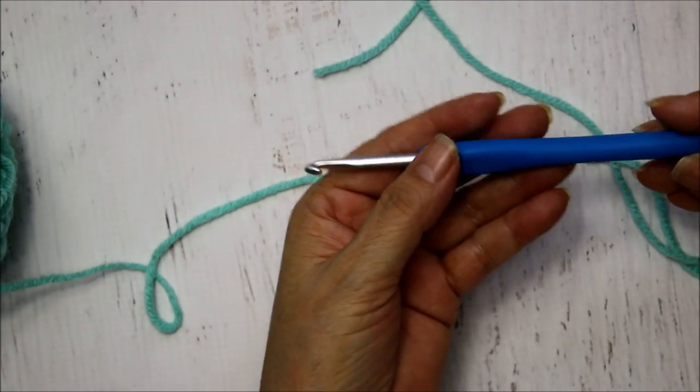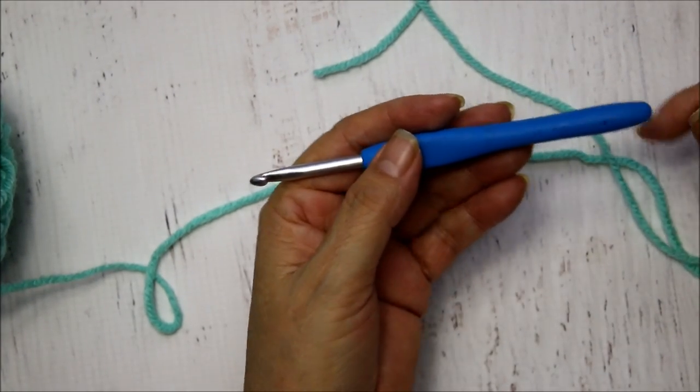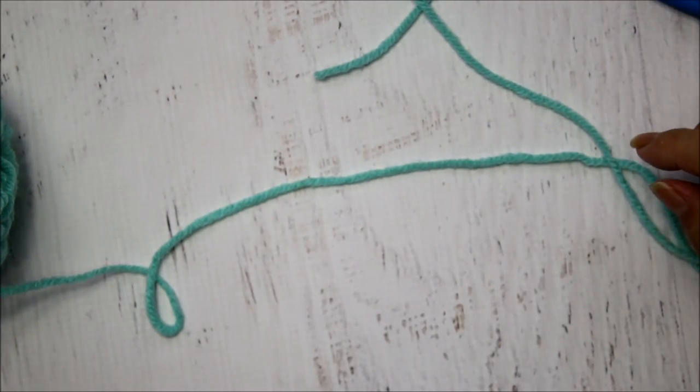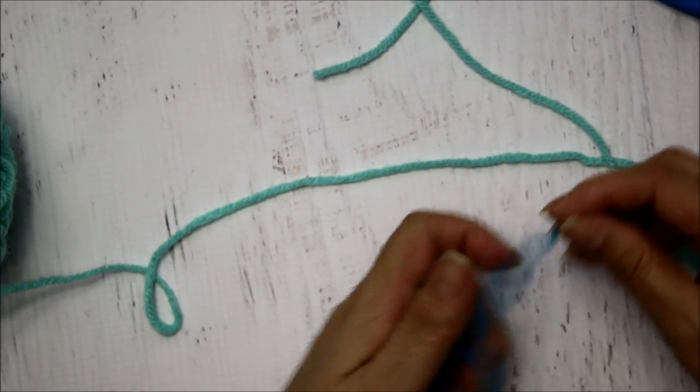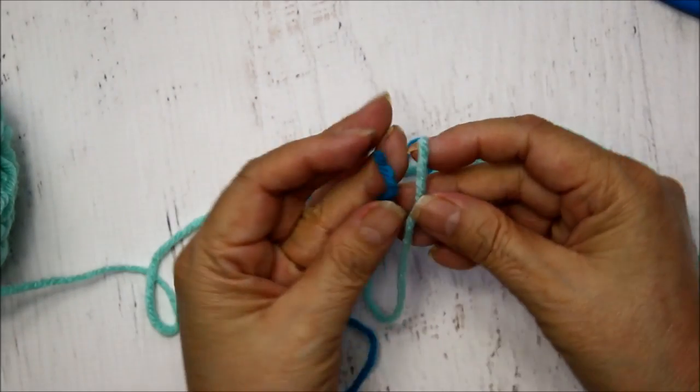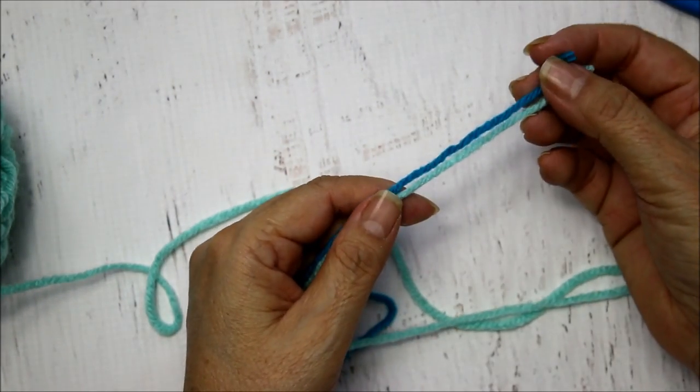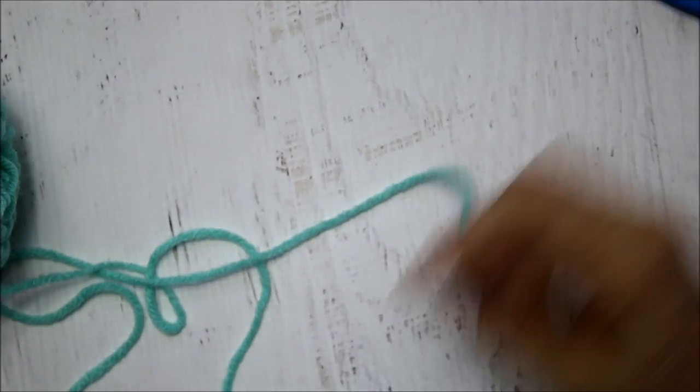To begin I'm going to be using an H hook which is a 5mm hook and I'm going to be using two different colors of medium weight yarn. I'm just using an acrylic yarn which is a worsted yarn here and you can use whatever colors you like and hook size.